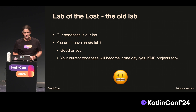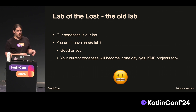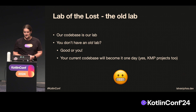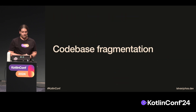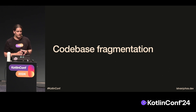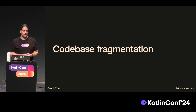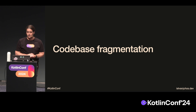That applies to KMP projects as well. To try to minimize the impact of our code base getting into that old lab stage, there are some things we can do to prevent that, or just be mindful about it. The first topic I'd like to touch is code base fragmentation — the phenomenon that happens if you add new technologies and methodologies to your existing code base without updating the rest of it. This can apply to Android projects or every other project, but we'll keep the discussion on the UI level.